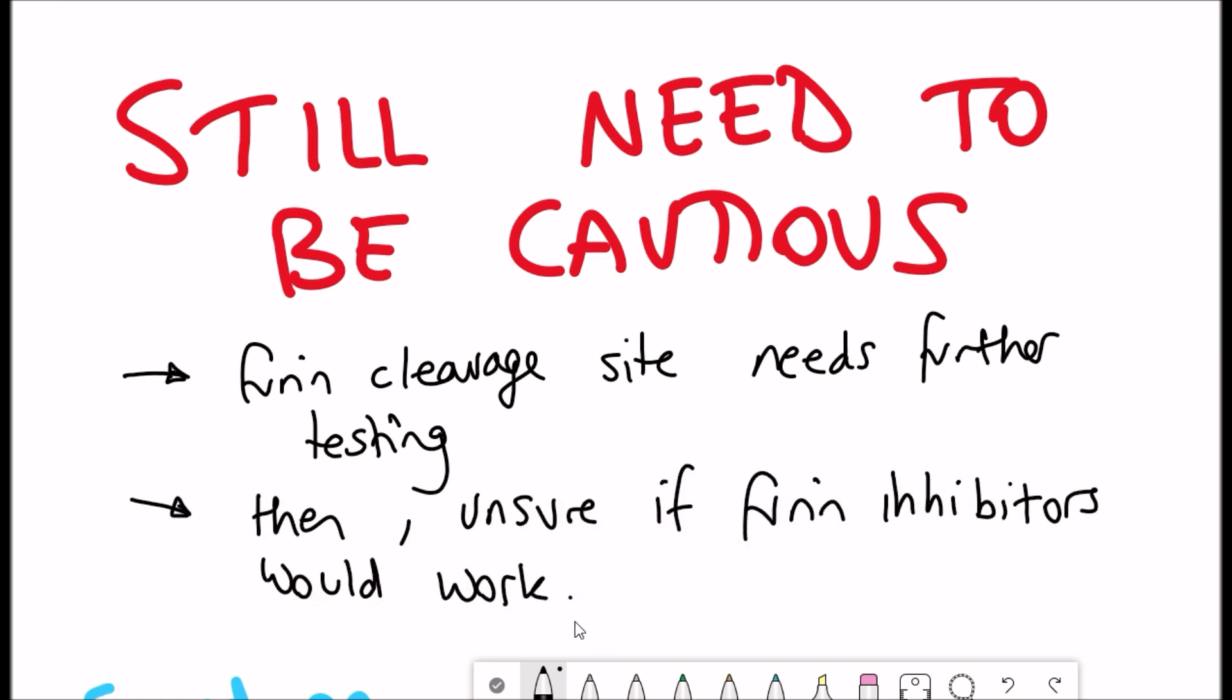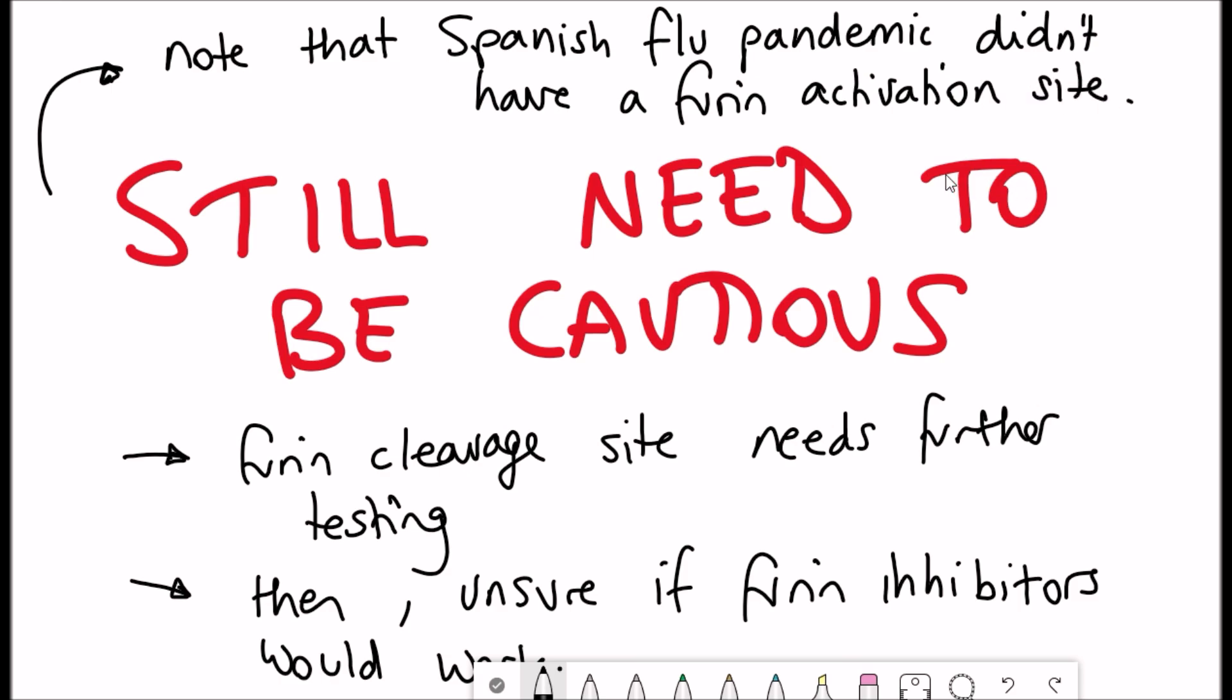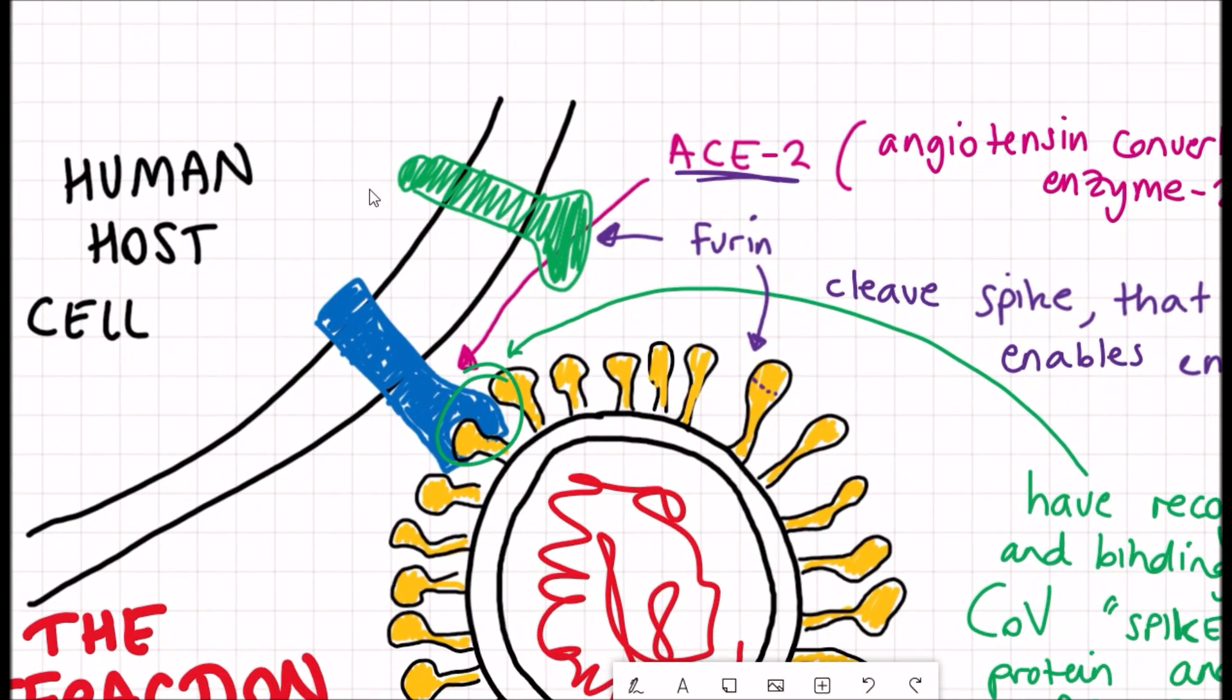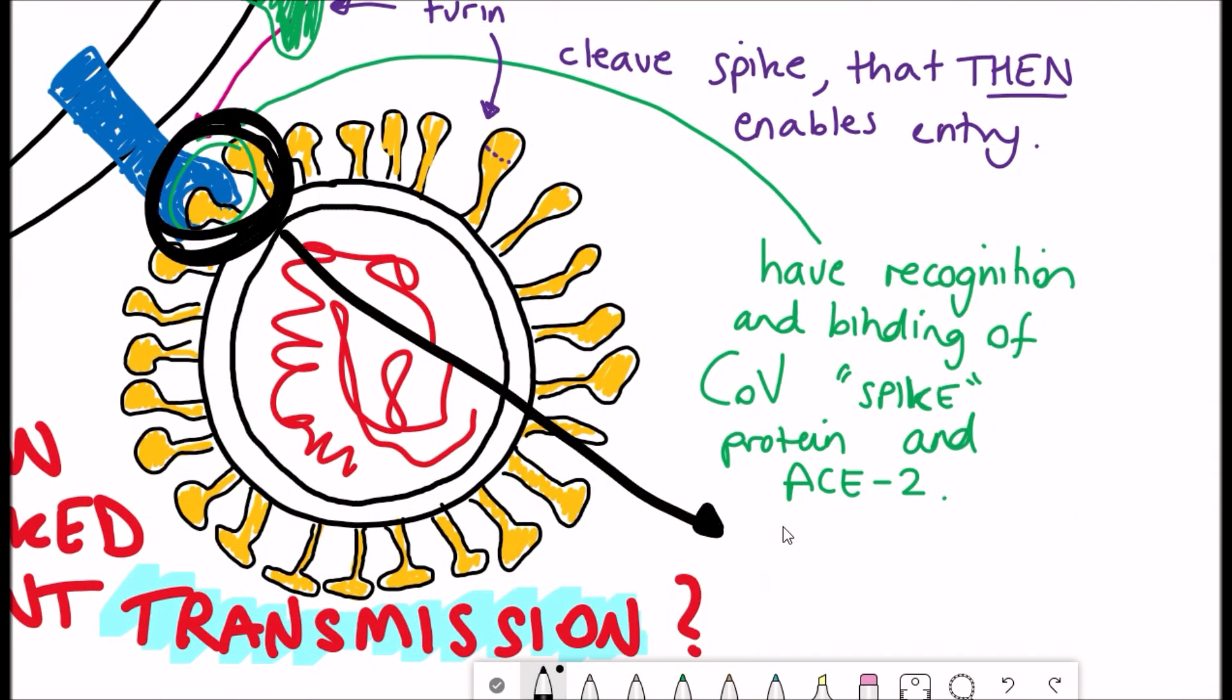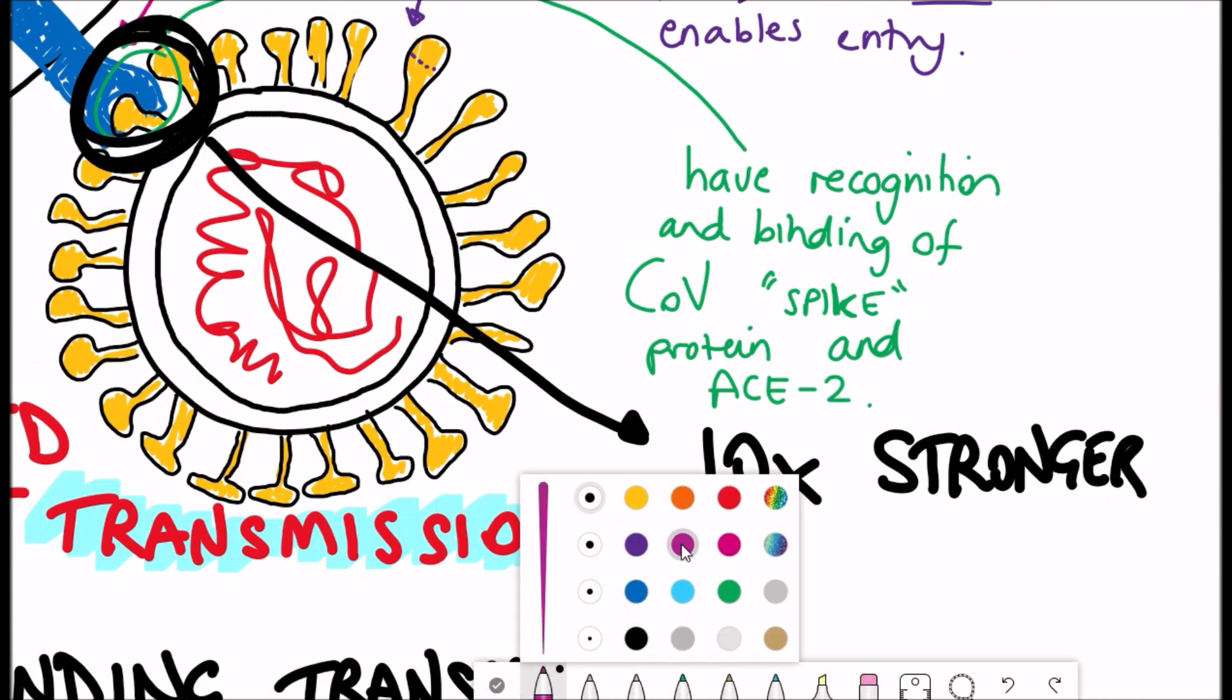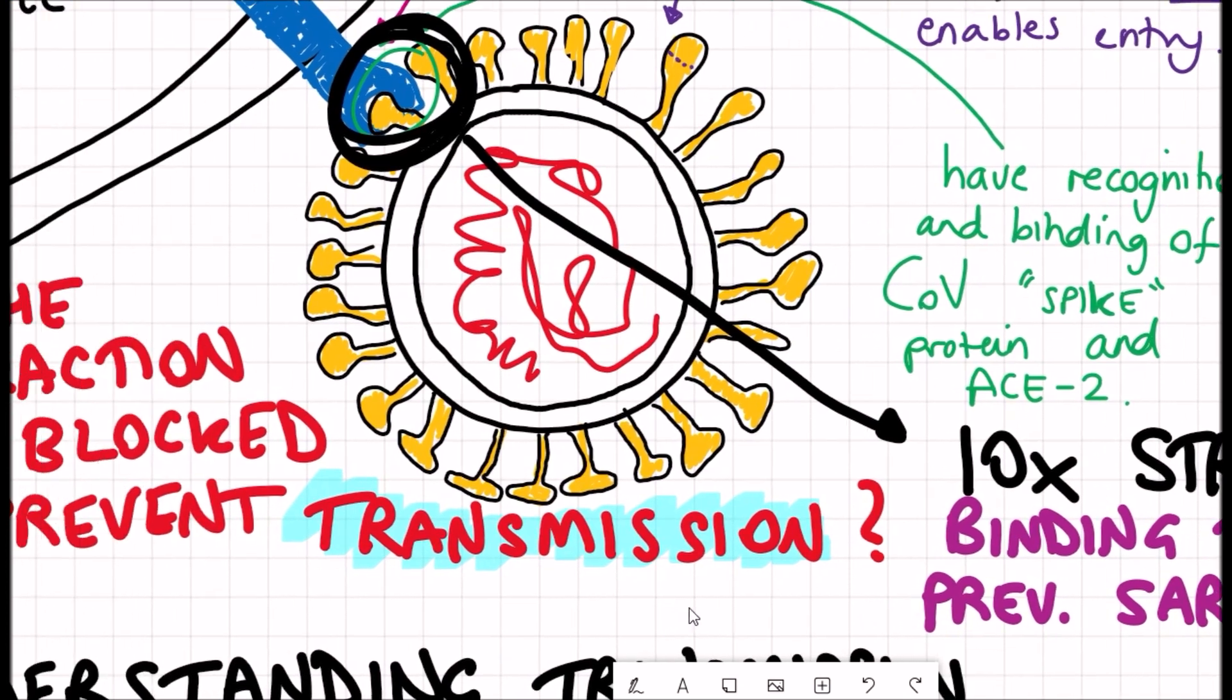And then we're unsure if these furin inhibitors would even work. So we just have to be cautious for now and note that there are other viruses we've seen, such as the Spanish flu pandemic, and they didn't have these furin activation sites. However, we've still got the ACE2 receptors that are potential targets as well. And interestingly, it's also been shown that the interaction between the novel coronavirus spike protein and ACE2 is 10 times stronger than it was in the previous SARS virus. So potentially by blocking that interaction, we can prevent transmission.